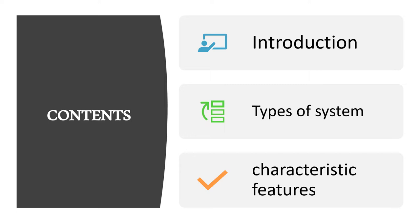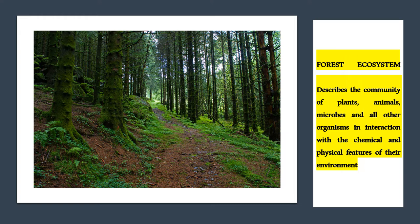Now let us start to understand the forest ecosystem. When we think about the forest, the first thing that comes to mind is a beautiful large area of land surrounded by trees, flowers, and birds — all living life ranging from very small to very big animals. The forest ecosystem basically describes the community of plants, animals, microbes, and all other organisms in interaction. All organisms are dependent on each other. If any component of the food chain is disturbed, the whole food chain gets disturbed.